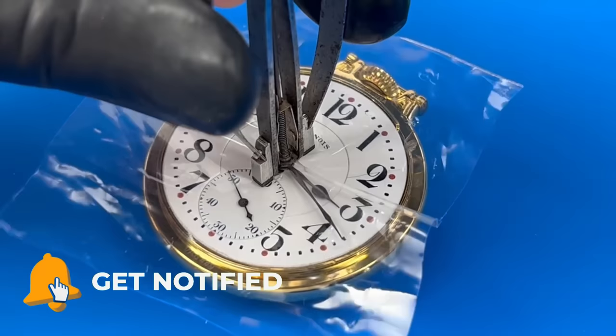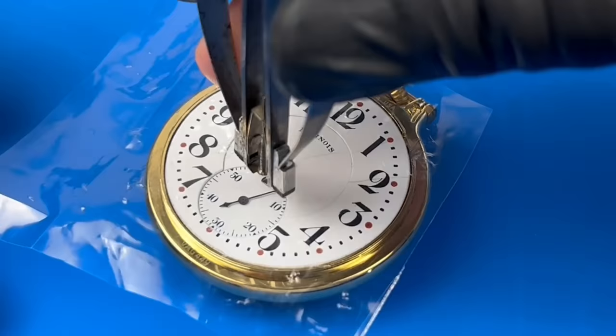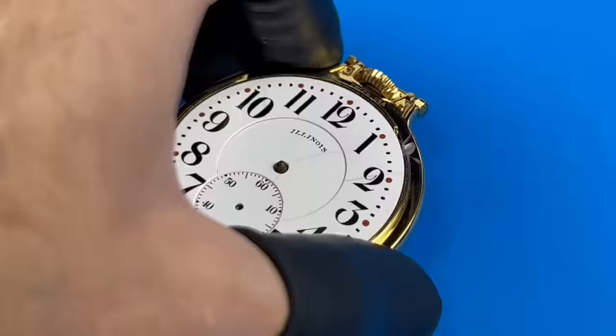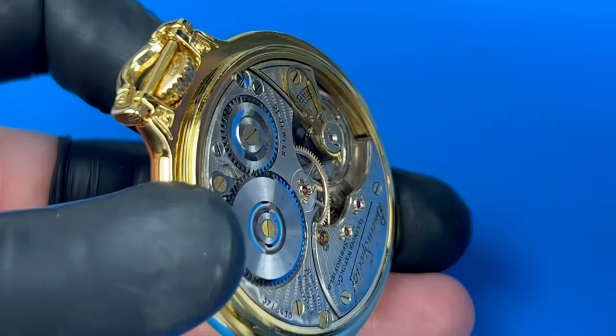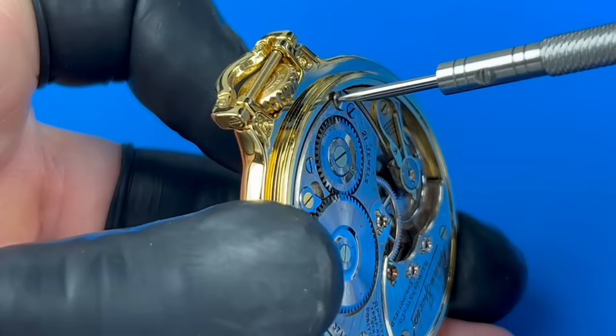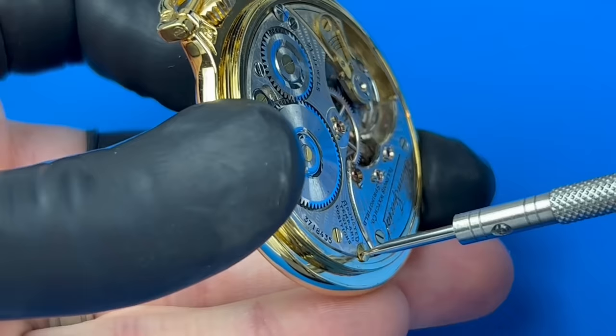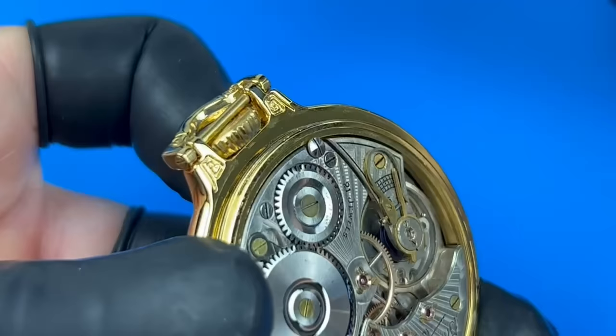I start by removing the hands with the presto puller. There are two case screws securing the movement into the case. Once I remove these, the movement can be swung out from the front.